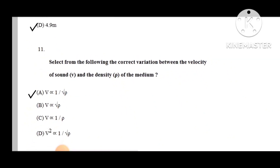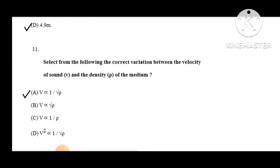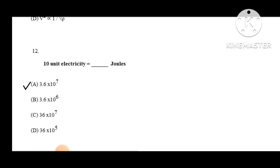Question number 11: Select the correct variation between velocity of sound V and the density P of the medium. The correct answer is that V is directly proportional to 1 by root P. Question number 12: 10 units of electricity equals how many joules? The correct answer is 3.6 × 10^7 joules, which is option B.